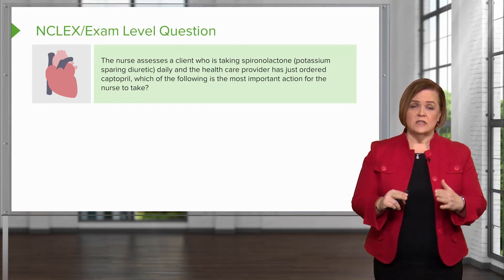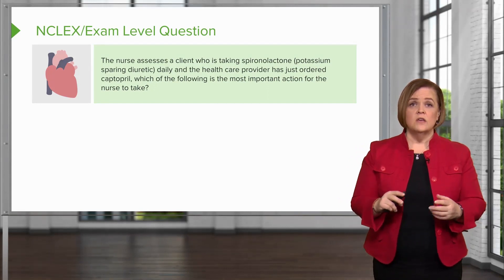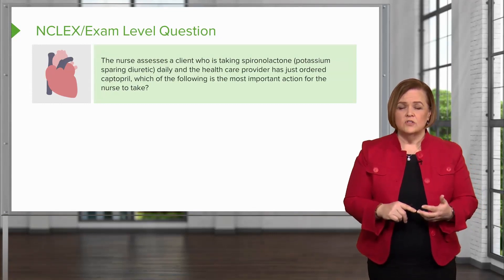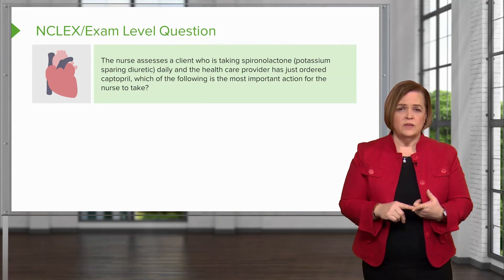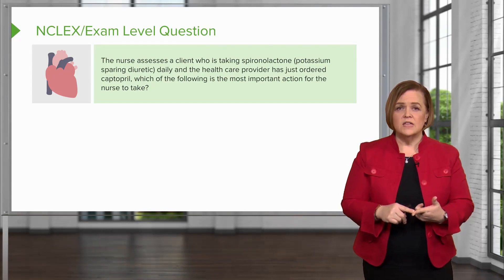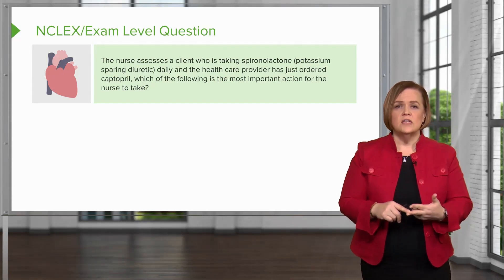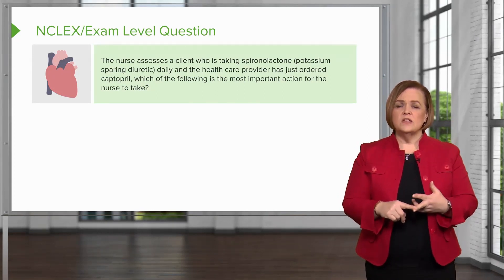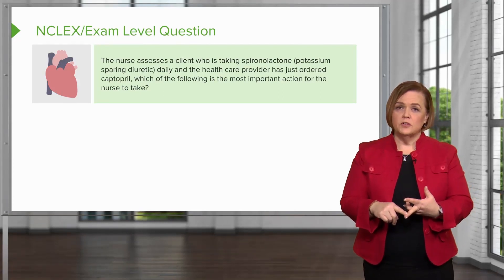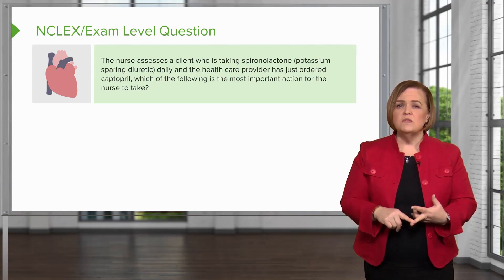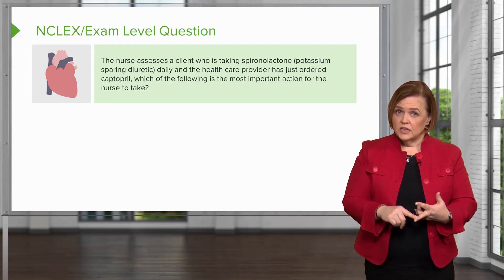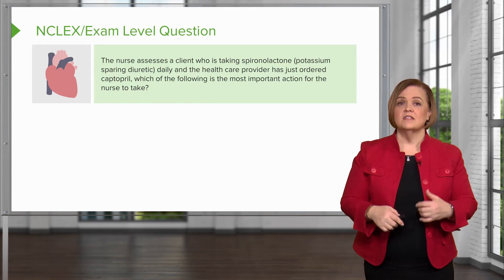The rule in NCLEX is patient safety is always first. So for this particular patient in this particular setting, what keeps them the safest? What's particular about this patient? I don't know if they're male, female, young, or old. All I know is they're taking spironolactone daily already, and we're just starting Captopril. So what do I know about a patient that's just starting Captopril? They're about to get their first dose, because it's just been ordered. Which of the following things is the most important action for the nurse to take? It's the one that keeps this particular patient in this particular setting the safest.